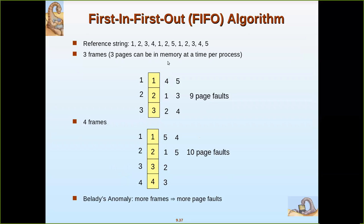Let us take another example with reference string 1, 2, 3, 4, 1, 2, 5, 1, 2, 3, 4, 5 and go with three frames. When the first pages are referenced, page faults occur. Page one is loaded — page fault. Then two — page fault. Then three — page fault. Then four comes, but the frames are already full, so the oldest page must be removed.